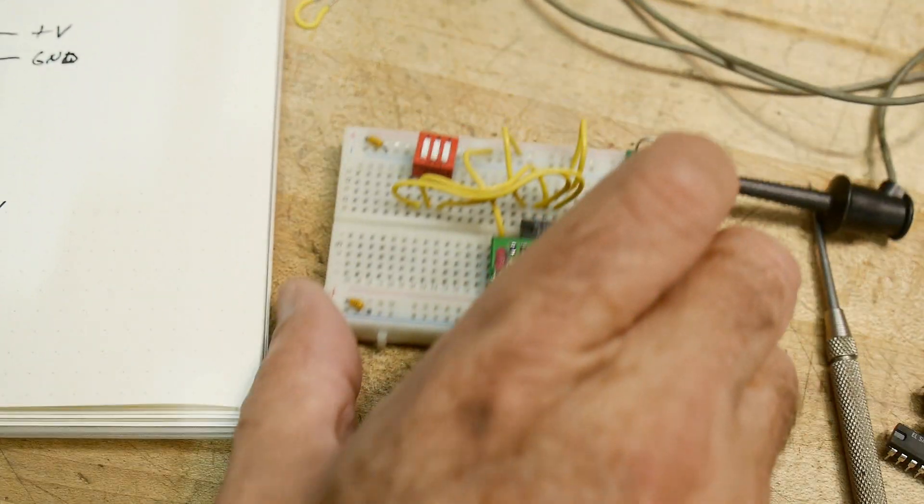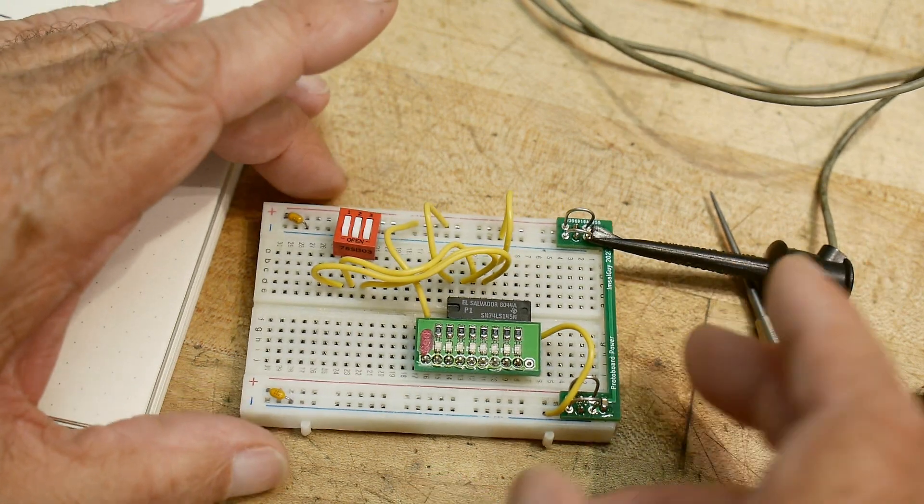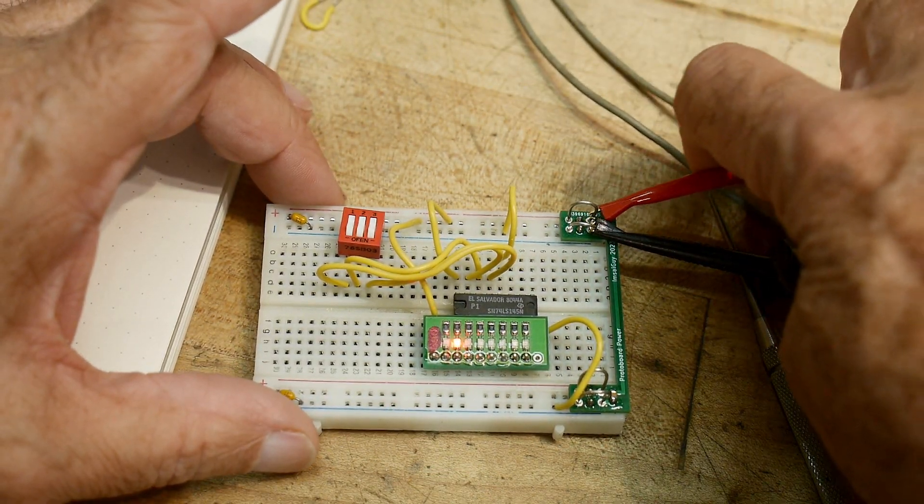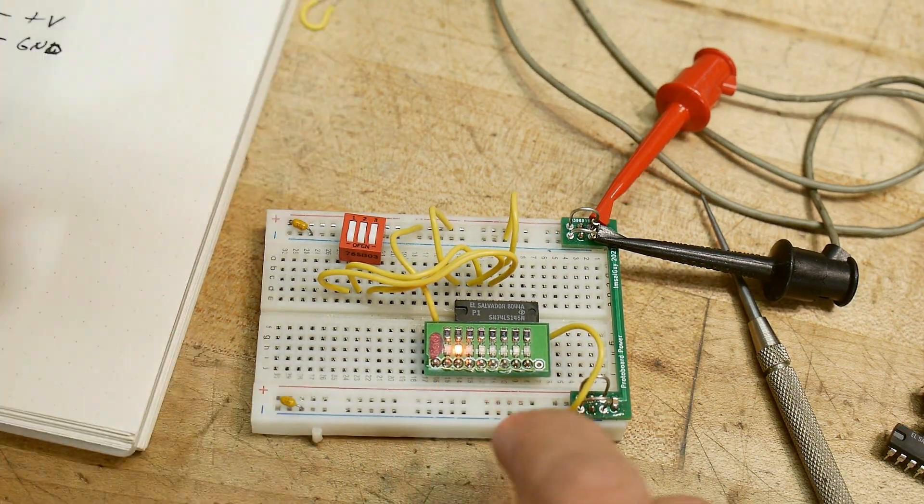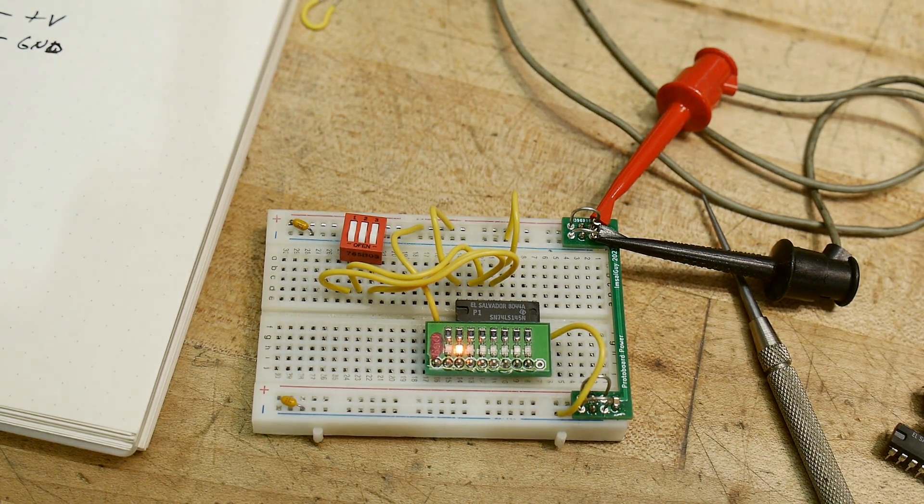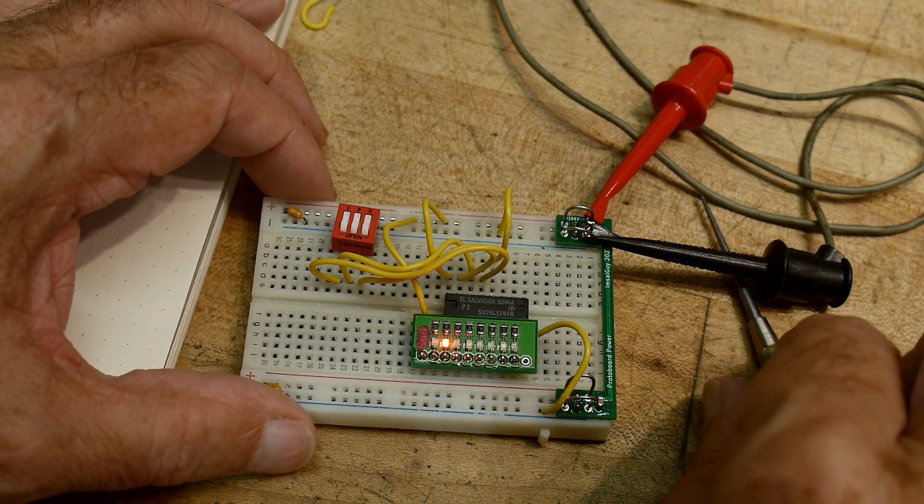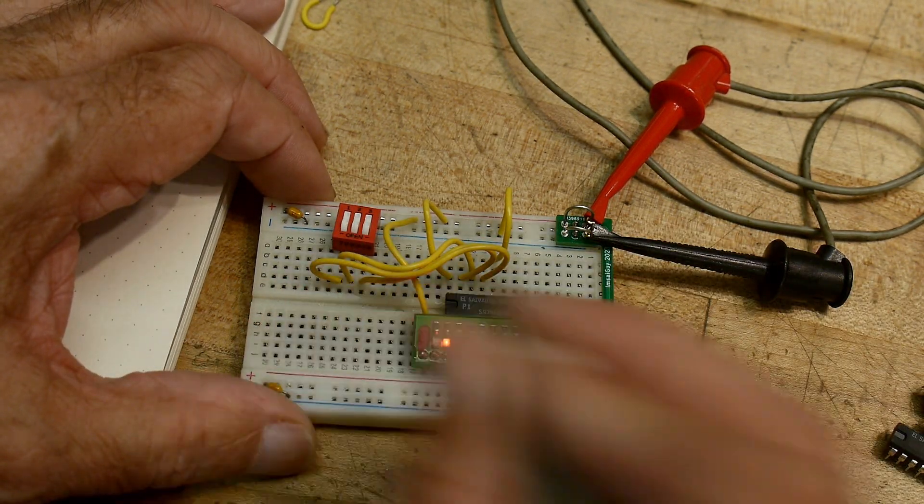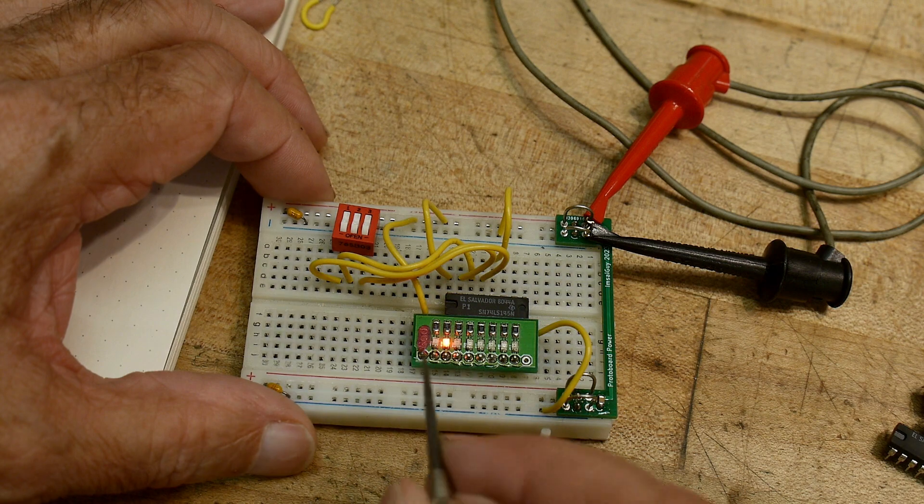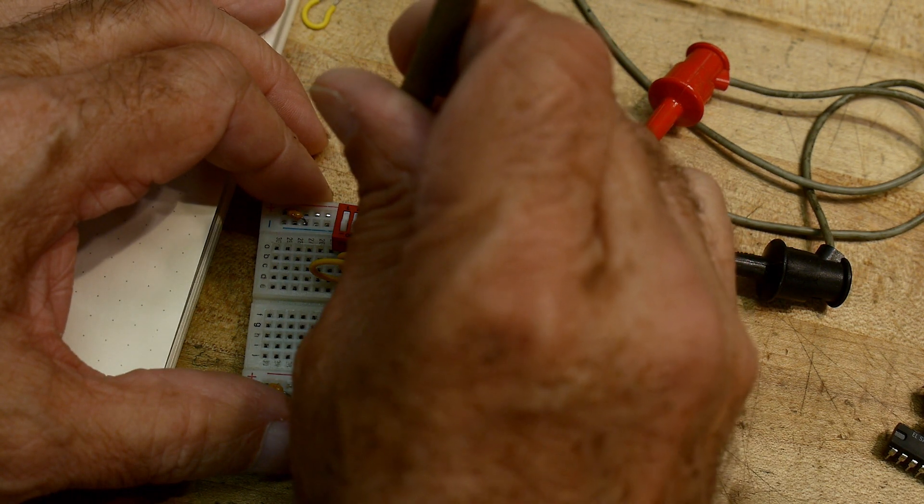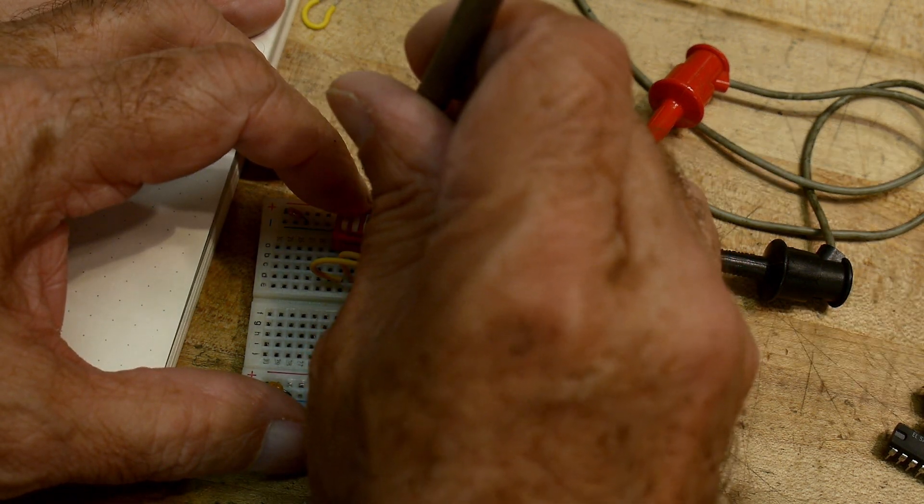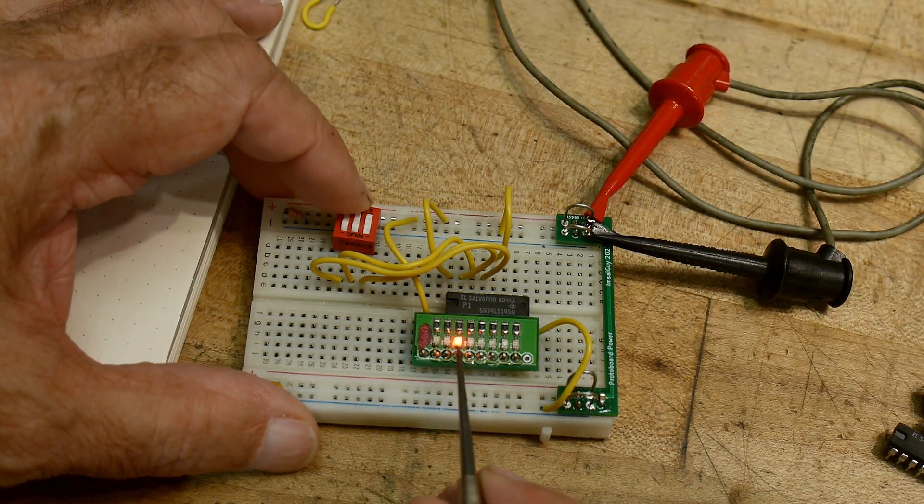All right, so let's take a look at the breadboard and let's hook up some power to it. And we have an LED already lit up. Let me darken the camera here a bit so we can see the LED. All right, so I'm inputting a zero zero zero and we have the zero LED is lit. And if I put in a binary one, we move over one.